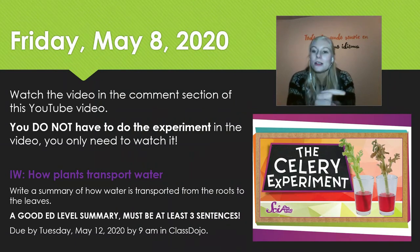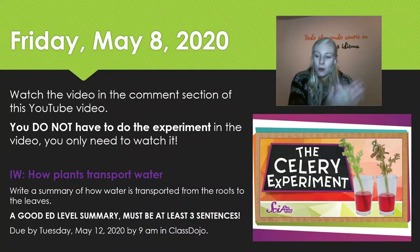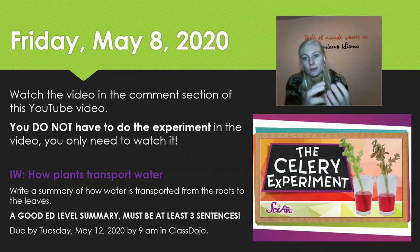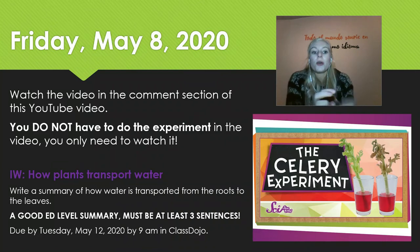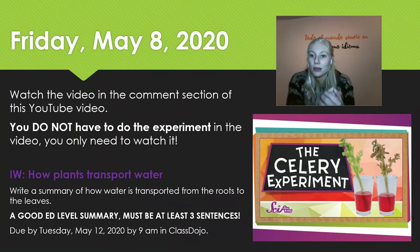So you're going to again write three sentences. What you're going to tell me is how plants transport water. You're going to watch the video and the video will explain everything — it's an experiment that also explains how plants transport water. You are going to write a summary of how water is transported from the roots to the leaves. A summary means all the information in the video written down in your own words in three sentences.